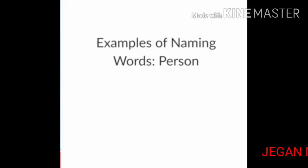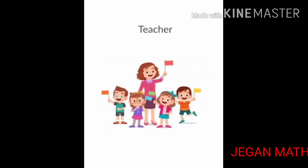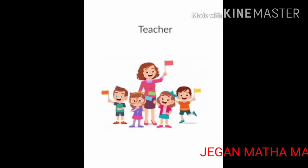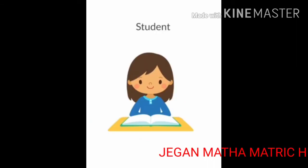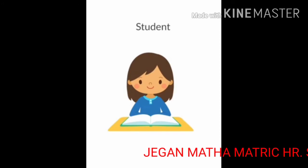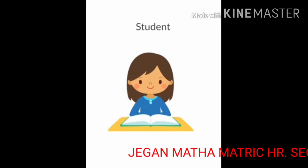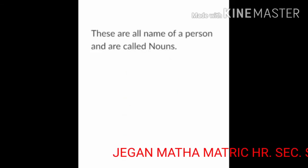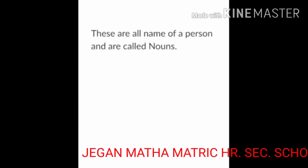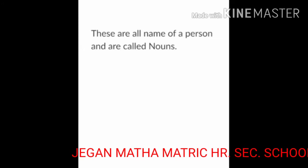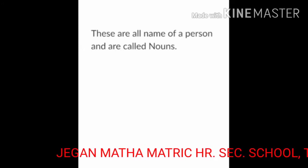Example of naming words — person. Teacher: T-E-A-C-H-E-R. Doctor: D-O-C-T-O-R. Student: S-T-U-D-E-N-T. These are all names of a person and are called nouns.